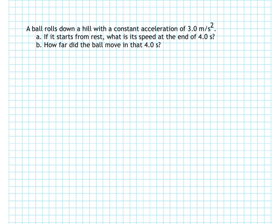A ball rolls down a hill with a constant acceleration of 3 meters per second squared. If it starts from rest, what is the speed at the end of the fourth seconds?